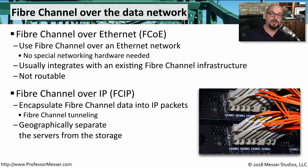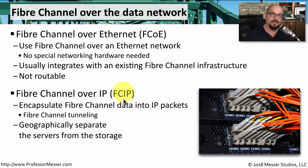If the storage and the devices that need access to that storage are located on different IP subnets, you may want to consider using Fiber Channel over IP. This is effectively tunneling Fiber Channel within existing IP packets, which would allow you to route this traffic from one subnet to another and still be able to communicate to a Fiber Channel device.